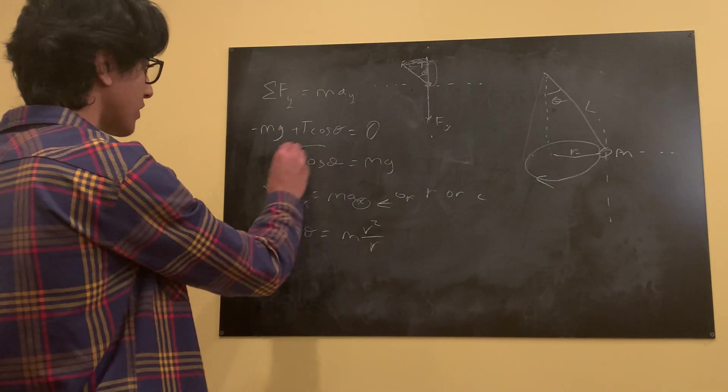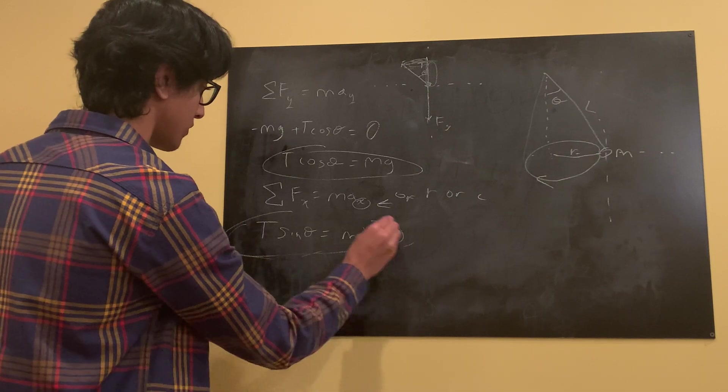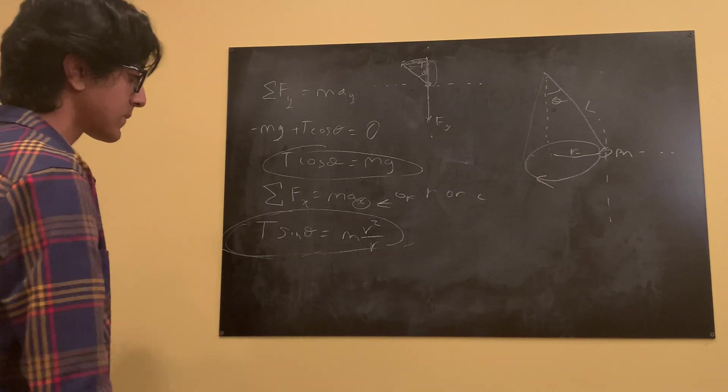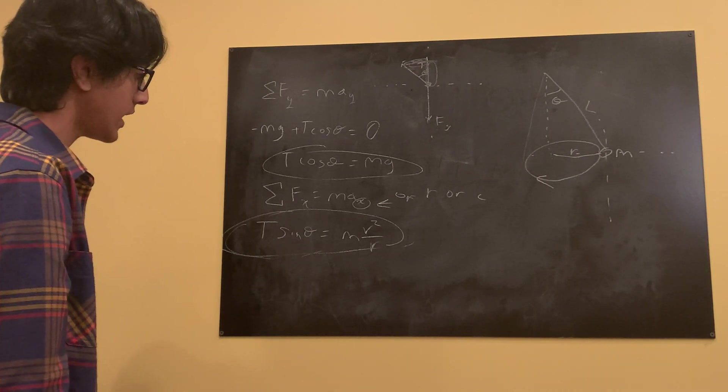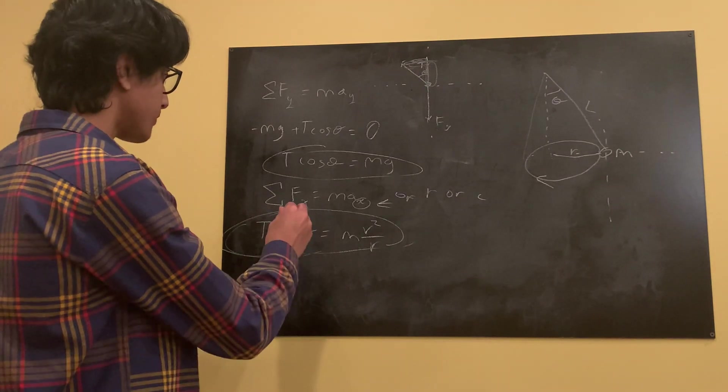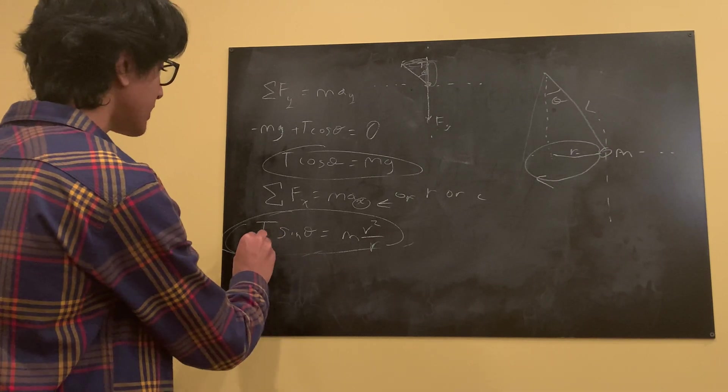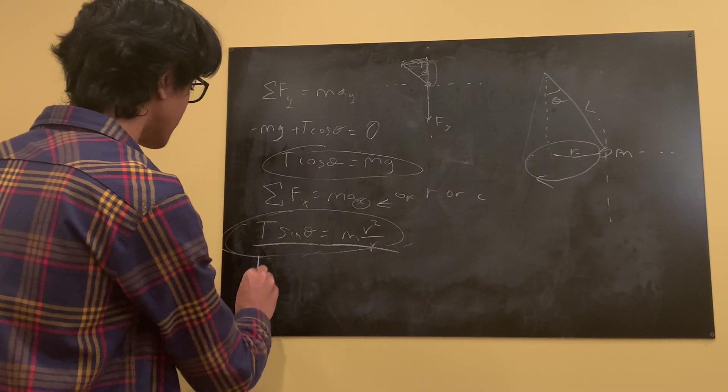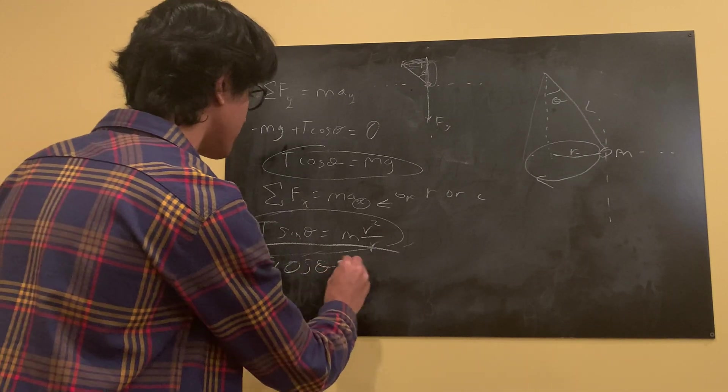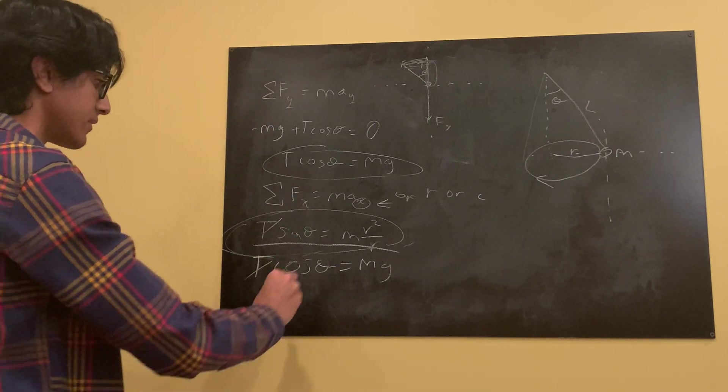Oops. There we go. Okay. We have these two equations. We want to find theta. So, what we can do to simplify them is use our two equations. So, and divide them out. I'd say that's the best course of action. So, this equation, divided by that first equation, T cosine theta is equal to mg. T's cancel out. T's cancel out. M's cancel out. M's cancel out.